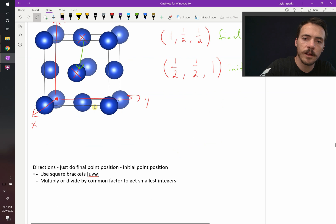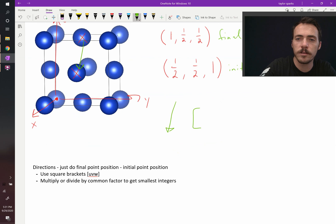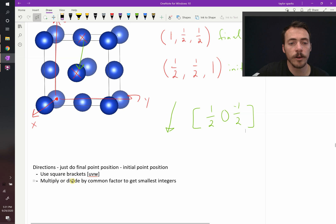For this one, that direction that we just drew there, it's going to be 1 minus 1 half. So we're going to do square brackets. 1 half. And then it's going to be 1 half minus 1 half. Zero. And then 1 half minus 1, so it's going to be negative 1 half. Right?